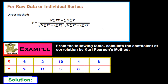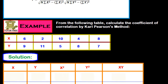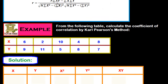Let's look at an example. From the following table, calculate the coefficient of correlation by Karl-Pearson's method. The data given is: x is 6, 2, 10, 4, 8 and y is 9, 11, 5, 8, 7. As seen in the formula, we need a column for the product xy, a column for x-squared, and a column for y-squared. The x and y values are already given and we get their summations.